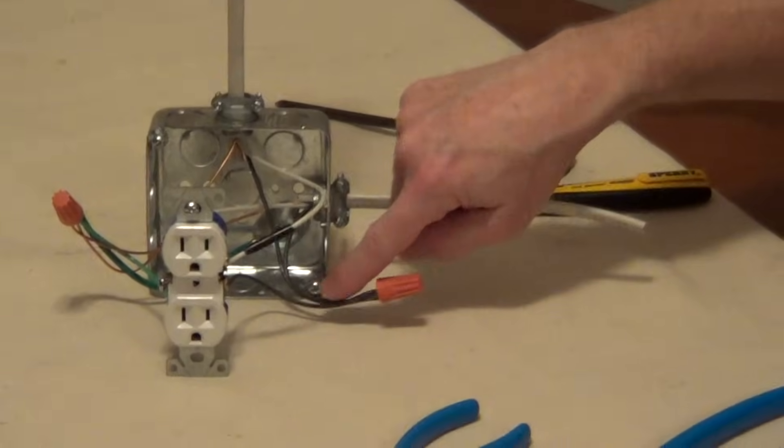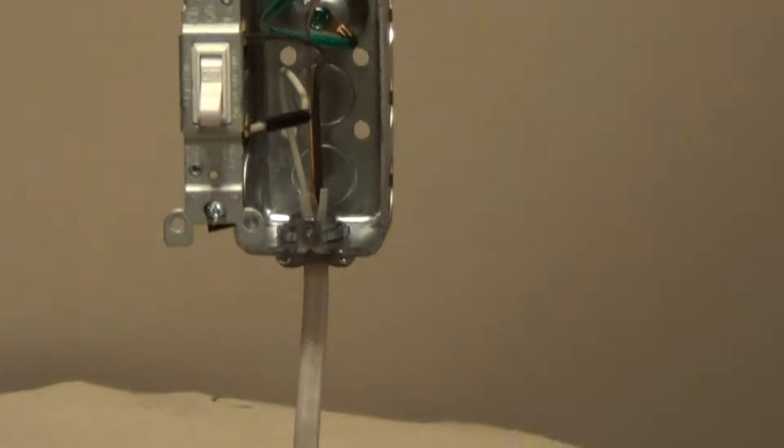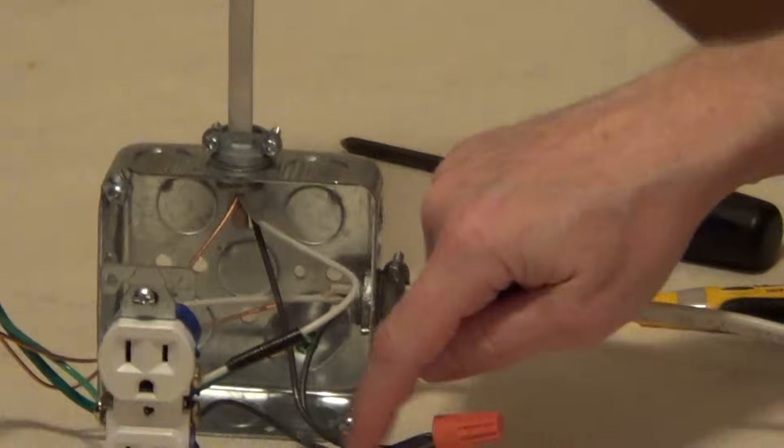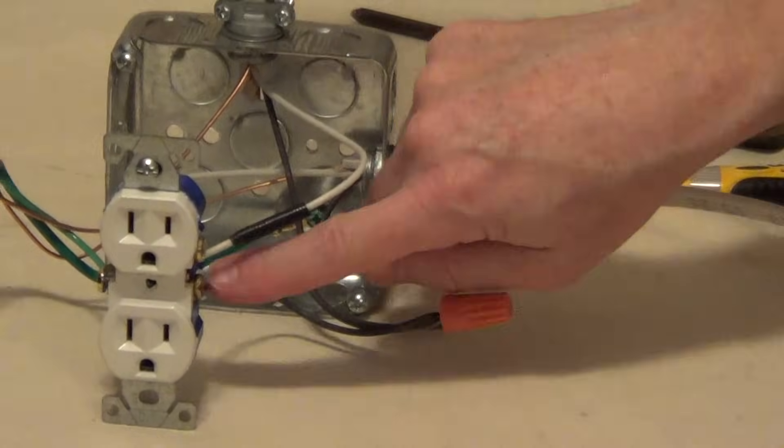We have the hot going to a leg going up to the switch. And then we created a pigtail, a little wire going to the bottom of the outlet. Now this hot from the service panel is always on, so this bottom part of the outlet is always on.